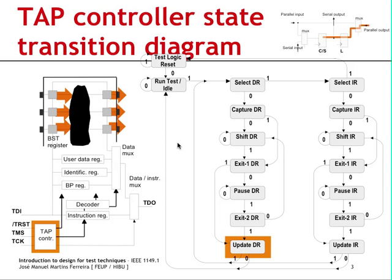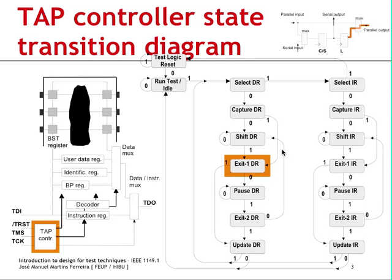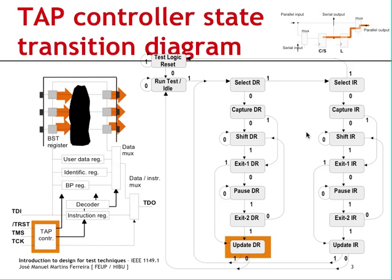Going back one test clock cycle: when transitioning from exit 1 to update data register, it is when we reach the update data register state that the new test vector shifted in comes out to the output pins.